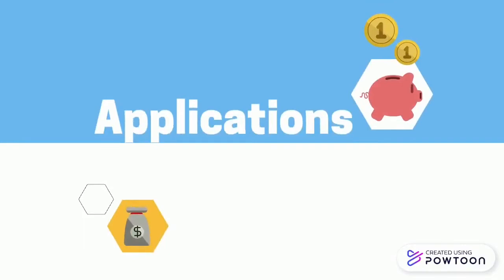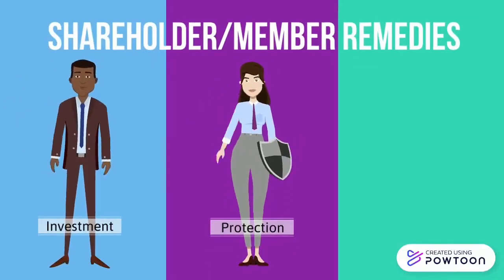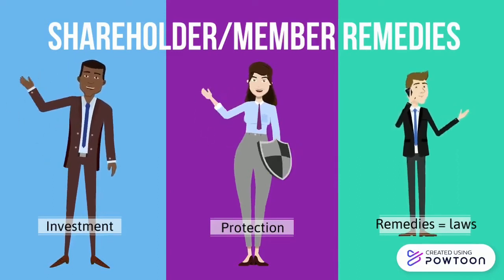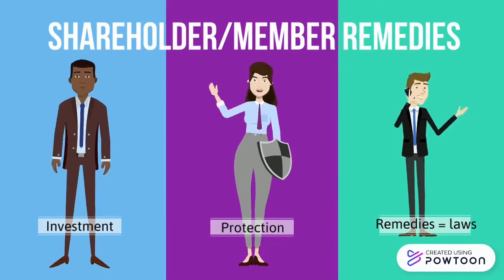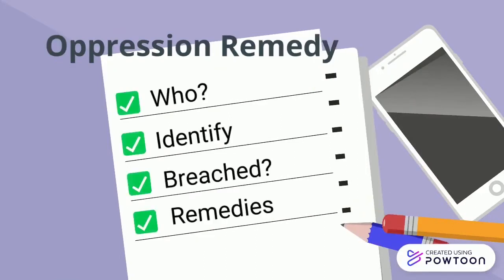The application of law in this case will explain the legal recommendations and course of action available to Luna. Shareholder or member's remedy is a form of protection for investments in a company — the power shareholders have when detecting if directors have breached their duties. Remedies are the laws in place to fix these situations. One of the main remedies that is a personal matter for shareholders is the oppression remedy. There are four steps to prove a case of oppression remedy: Who, Identify, Breach, and Remedies.